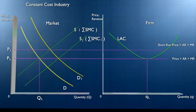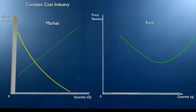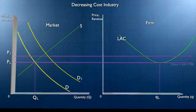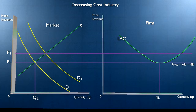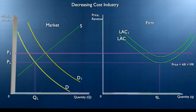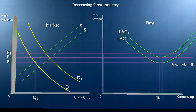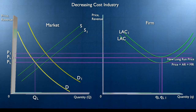Now, will it always be the case that the price in the long run returns to PL? The answer is no. It's possible that as new firms enter the market, we get external diseconomies of scale. New firms entering the market, for example, drive up resource prices, and the cost curves of all firms begin to rise. If that's the case, the supply curve shifts to the right and depresses price, but not as far as in the first case, because firms are now going to be breaking even at a higher price than before due to an upward shift in their average cost curve from these external diseconomies.